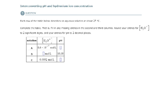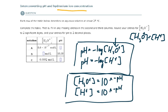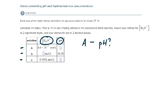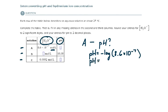We have three parts to this problem — solutions A, B, and C — where we are either given the hydronium ion concentration or the pH. For solution A, we are given the hydronium ion concentration and need to find the pH. The pH equals the negative log of the hydronium ion concentration, so: pH = −log(8.6 × 10⁻⁷), giving us a pH of 6.065.